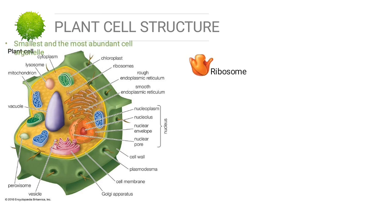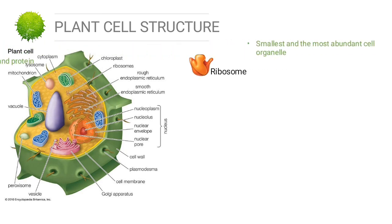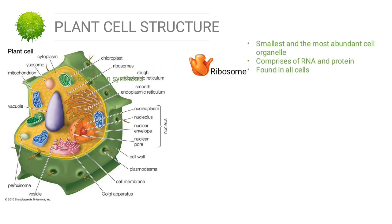The next plant organelle is the ribosome. The ribosome is the smallest and most abundant cell organelle. It is comprised of RNA and protein, found in all cells, and is the site for protein synthesis.